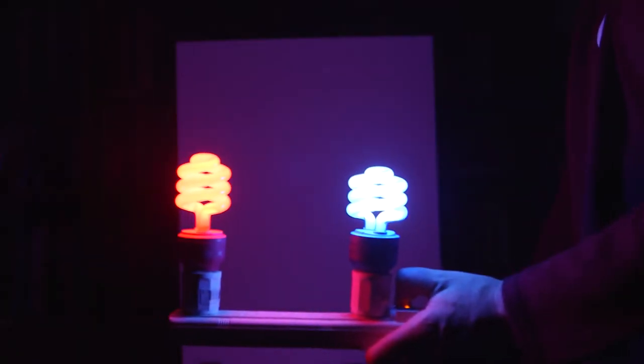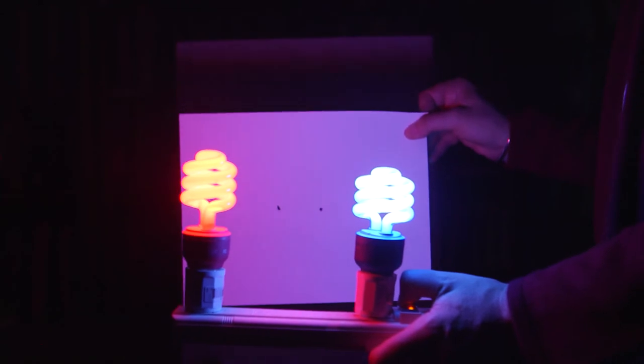Here are two pinholes punched in the paper. Take a look at what we get now. Now we're getting two images of this pair of light bulbs. You're seeing two red lights and two blue lights, and they're also right, left, reversed, and flipped upside down. So two holes gives you two images.